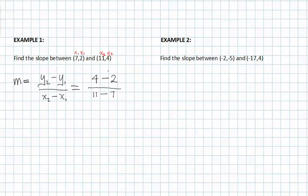Now I'm going to figure out what 4 minus 2 is and that is actually 2 in the numerator, and 11 minus 7 is 4.